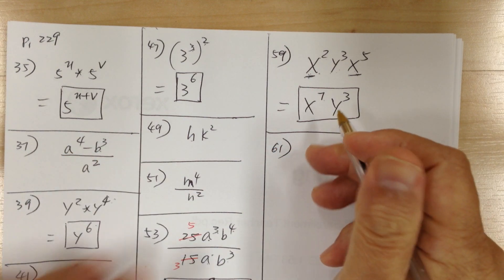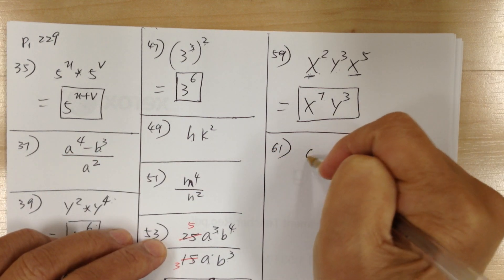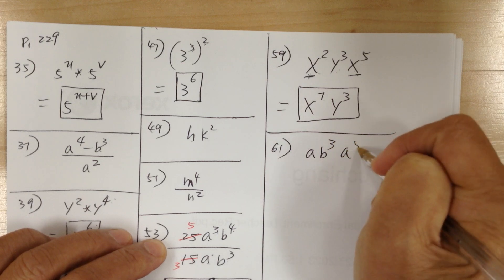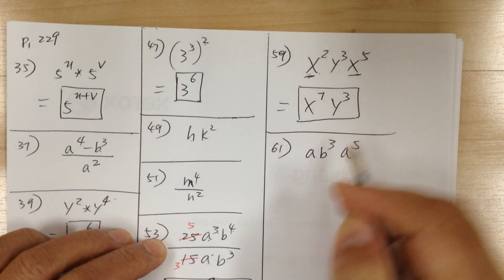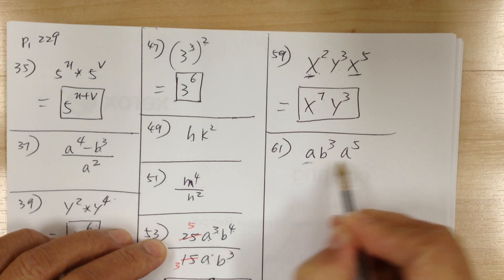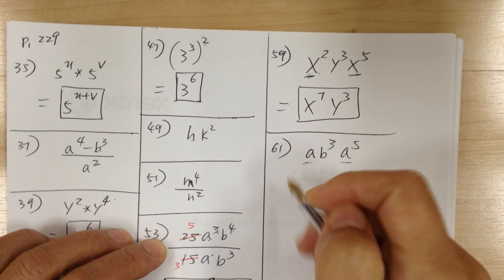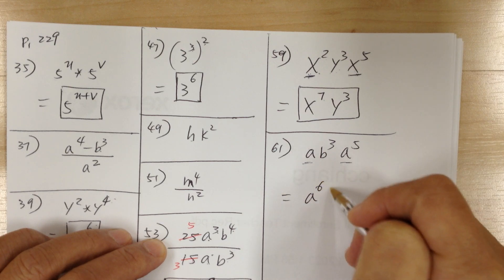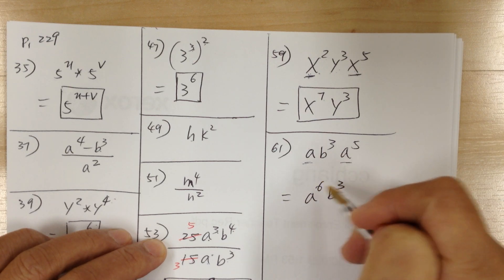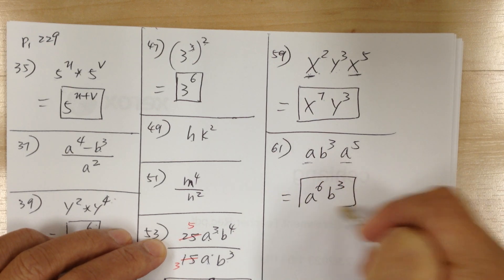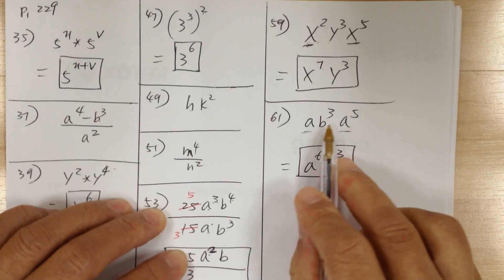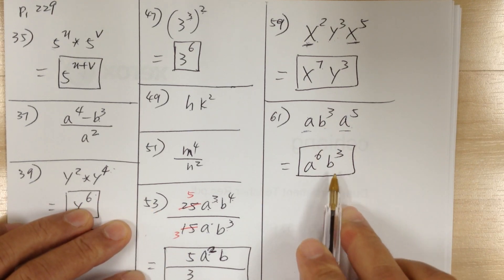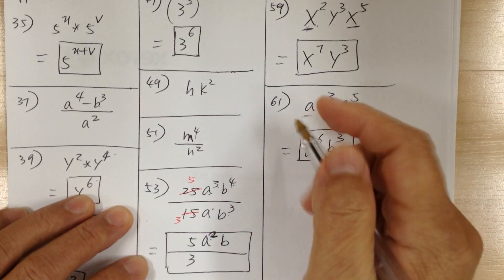You got a, b to the 3, a to the 5. The two a terms can combine, so it becomes a to the 6, b to the 3. You cannot combine a and b together because they are different bases — so just leave b to the 3 as is.